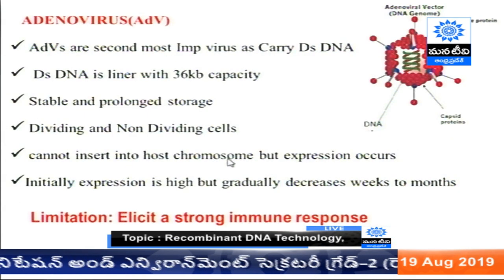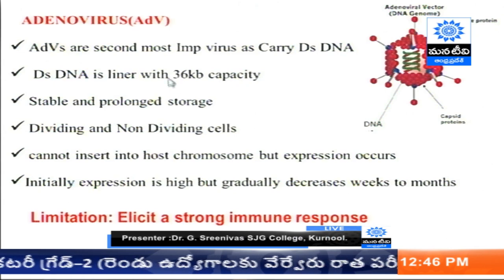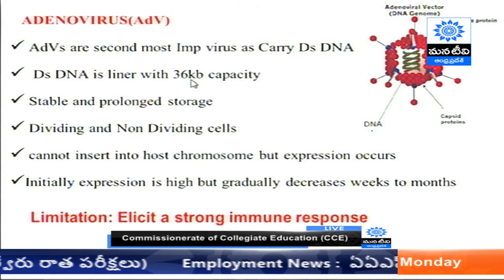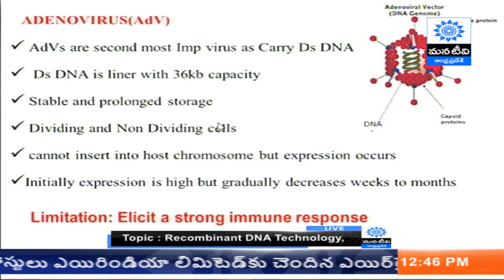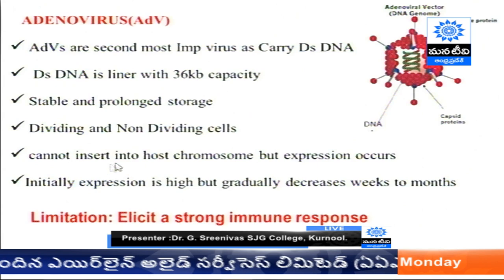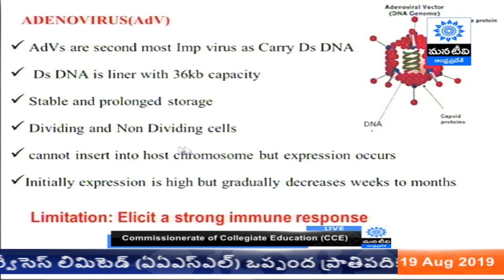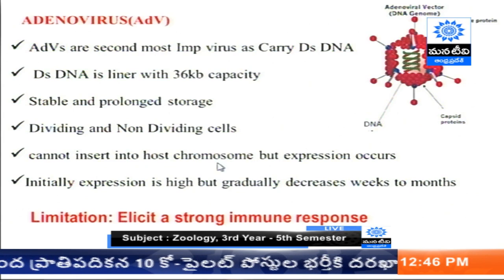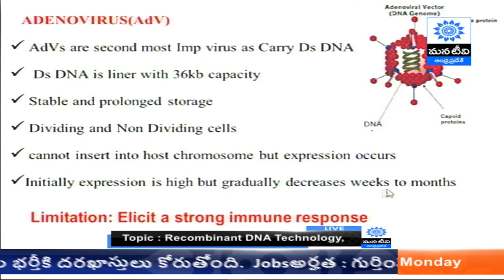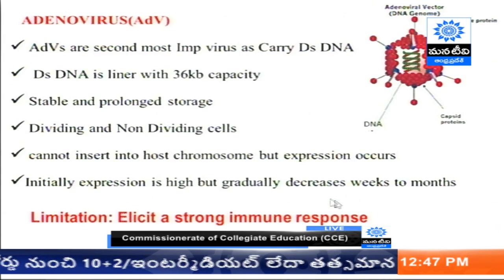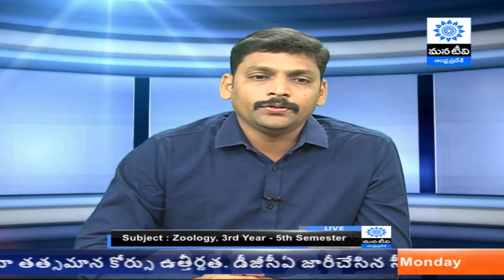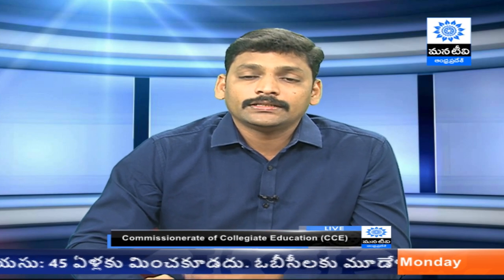Adenovirus is a specialized virus with a carrying capacity of 36 kb — larger than retrovirus which carries 8 kb. It can affect both dividing and non-dividing cells, but it cannot insert its genome into the host chromosome. Expression occurs and the virus initially stays in the host cell for a few months. Its main limitation is that it shows a high immune response, which must be minimized with immunosuppressors.